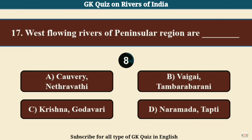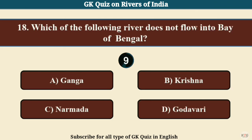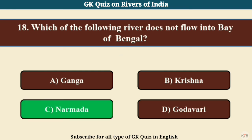Question No. 17. West flowing rivers of the Peninsular region — Answer D: Narmada. Question No. 18. Which of the following rivers does not flow into the Bay of Bengal? Answer D: Narmada.